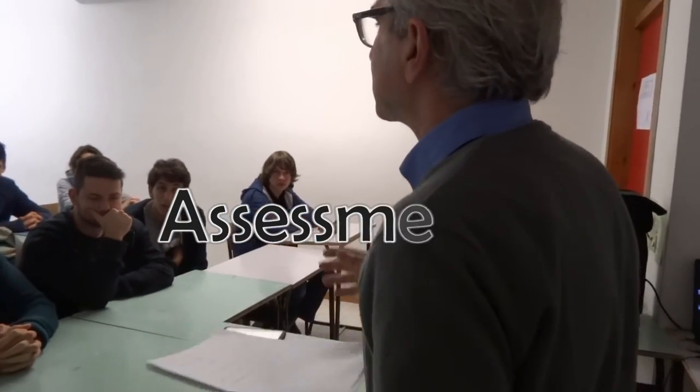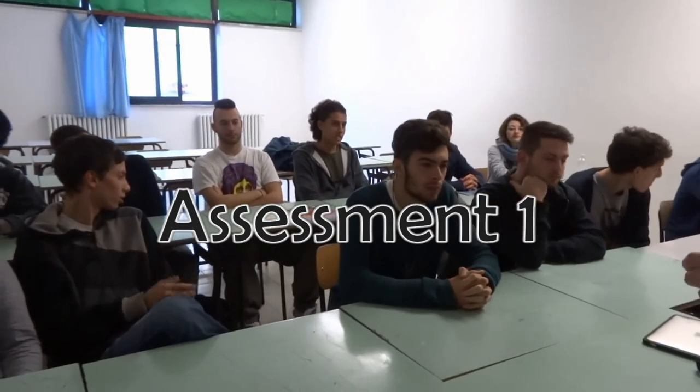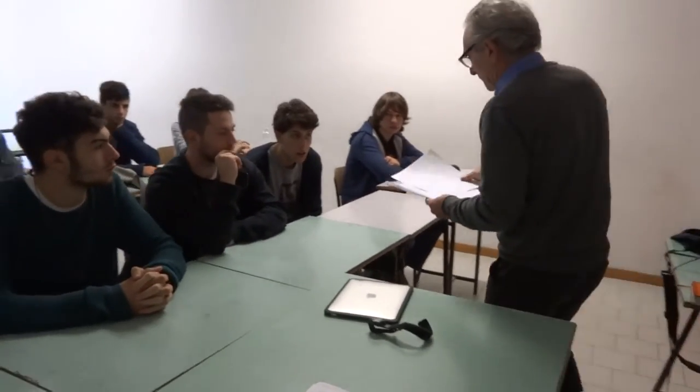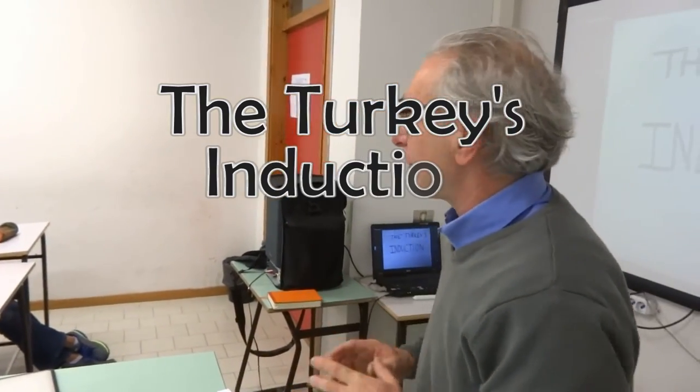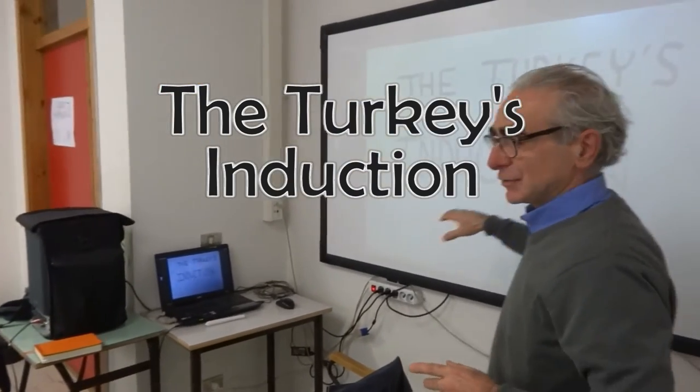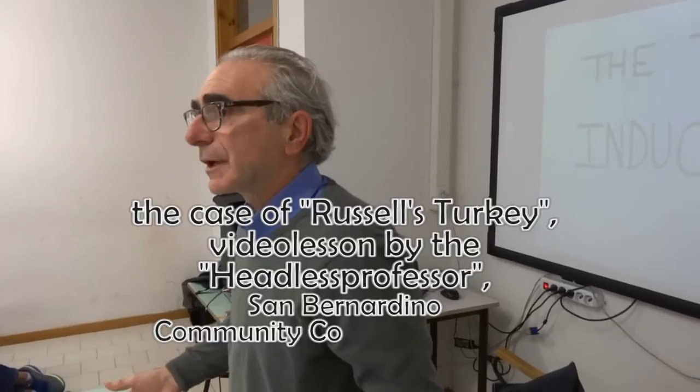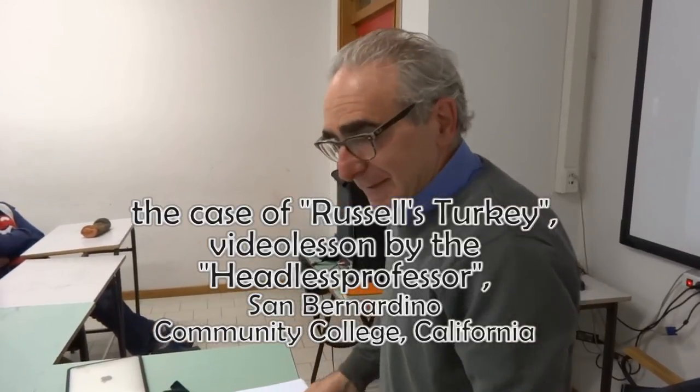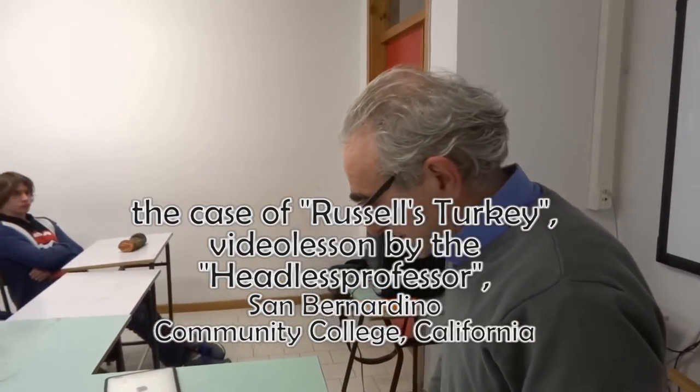Is that clear? Yes. So now I'll give you a test about Hume's problem of induction. You have 30 minutes to complete the test. Now we are going to watch a funny short video about the turkey induction. It is a story about a poor chicken, and we will discover why it is a poor chicken. It is a little example by Bertrand Russell to illustrate the weakness of the inductive reasoning in the context of Hume's argument. Let's go.